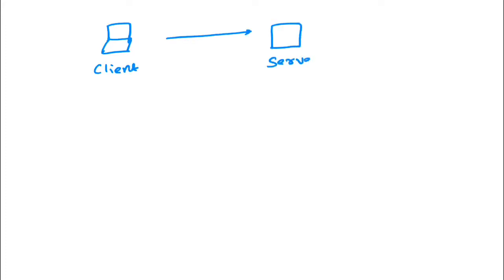So what happens in the network when a client sends a request to a server? Let me draw the pictorial representation. The client sends a request to the server and the server returns a response, but before the server executes any logic, a handshake mechanism happens between client and server. Let's say your APIs are deployed over HTTPS — there is a certain kind of handshake mechanism that happens between client and server.